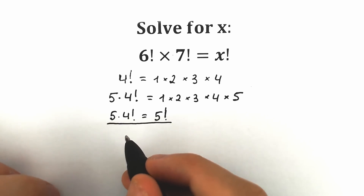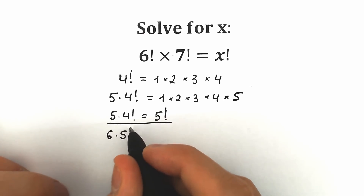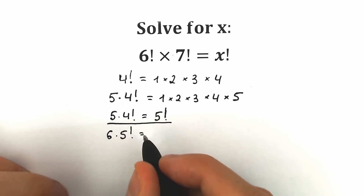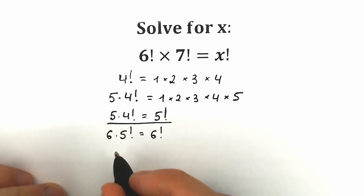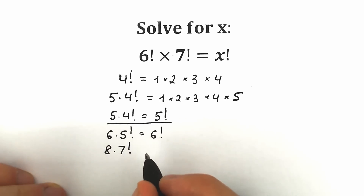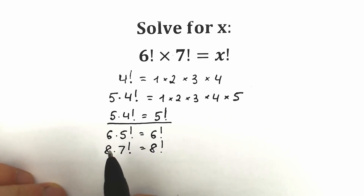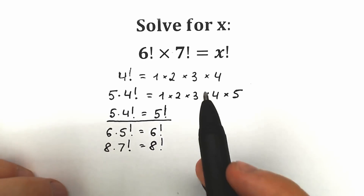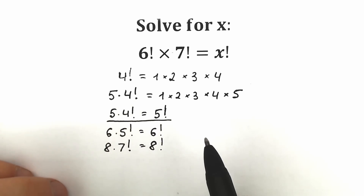And it's not only this case — we can easily write this formula more generally: 6 times 5 factorial equals 6 factorial. We can also write it with 8: 8 times 7 factorial equals 8 factorial. According to this pattern and property, we are going to solve our question.